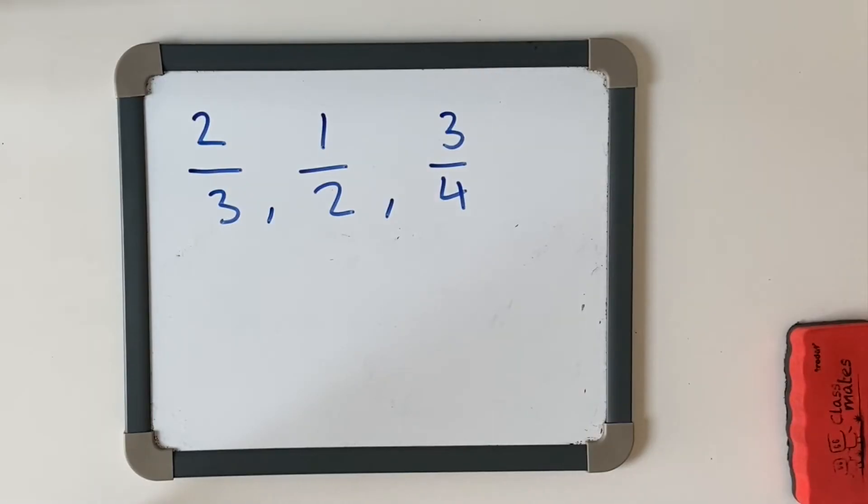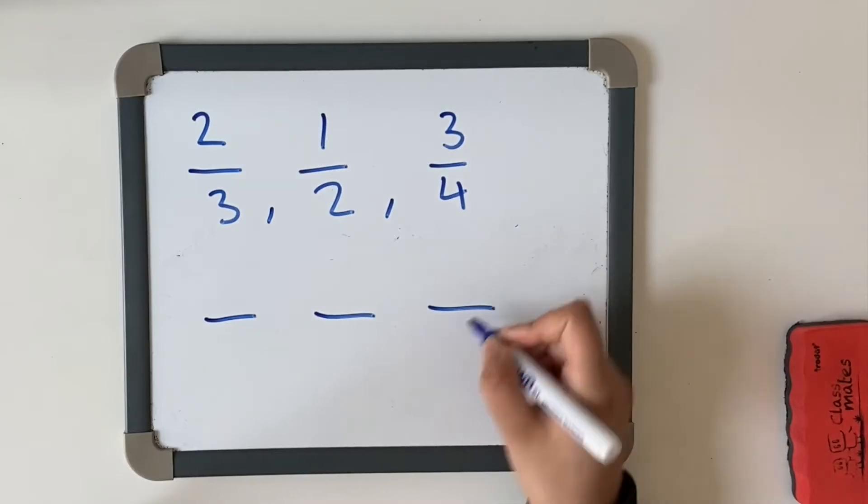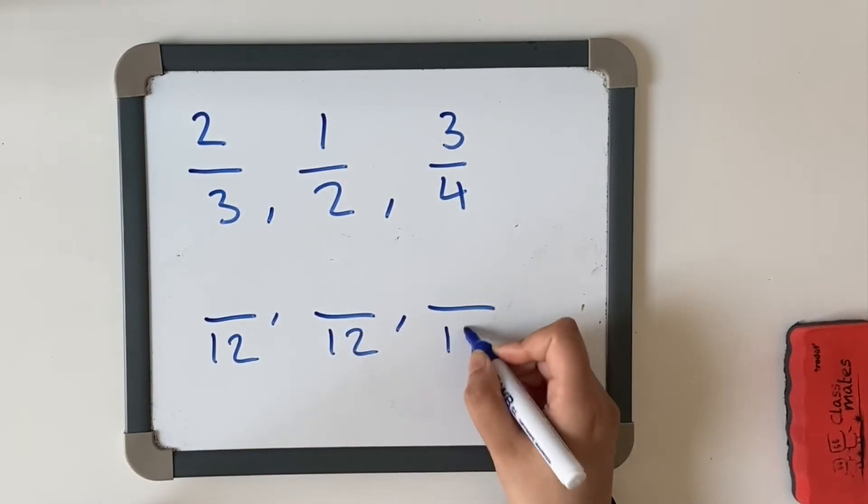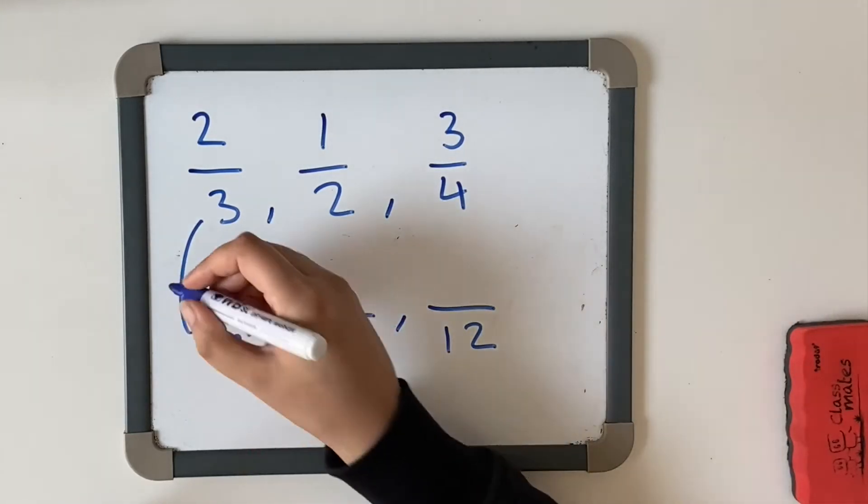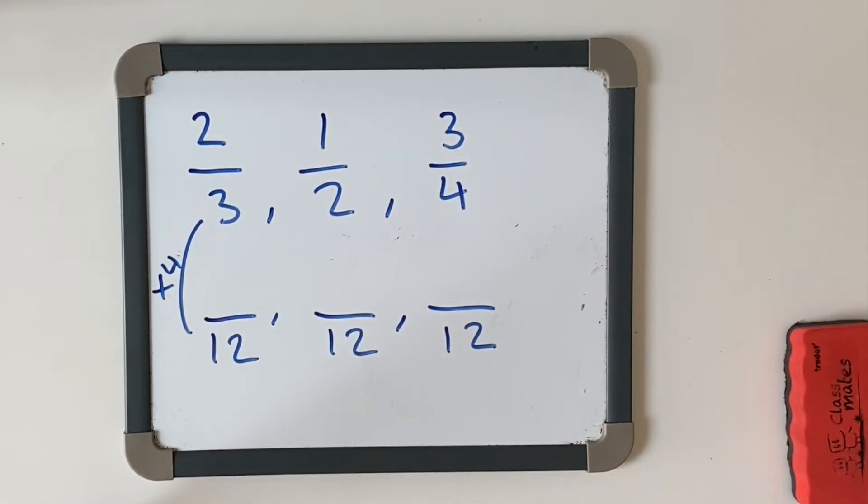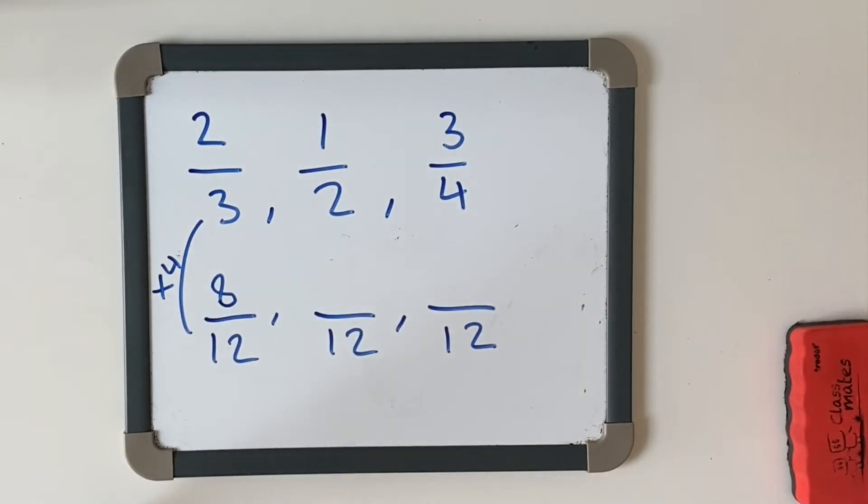We know that we're going to use 12 for our common denominator. I'm going to write it underneath here. How many threes go into 12? Three, six, nine, 12. We're going to multiply that by four. What you do to the bottom, you must do to the top. Two times four equals eight. So we've done the first one.